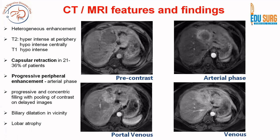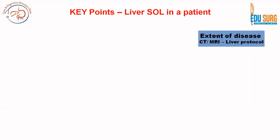If bilateral portal veins are involved, you may have contralateral atrophy as well. These are the classical features of intrahepatic cholangiocarcinoma to remember: pre-contrast, arterial phase showing peripheral enhancement, then centripetal and concentric filling of contrast up to the venous and delayed phase. You should also look for node positivity, metastasis on CT and MRI, satellite nodules, and multifocal disease.